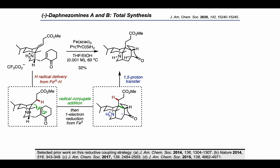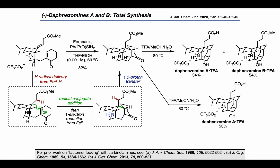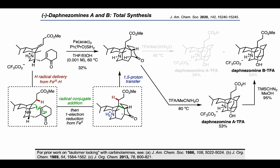To finish off the synthesis, the authors used the ketoamine as a precursor for the carbinolamine by treating with TFA and methanol in water, arriving at daphnizamines A and B as their trifluoroacetate salts. They also found that it was possible to selectively obtain the former target, isolating it in 53% yield, by using acetonitrile instead of methanol. From there it was possible to use TMS-diazomethane to convert the carboxylic acid into a methyl ester to obtain daphnizamine B.